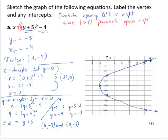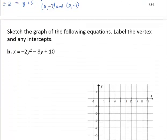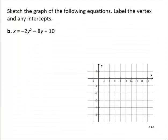Let's see another example. Again we're asked to graph the following equation, labeling the vertex and any intercepts. So we have x equals negative 2y squared minus 8y plus 10. Again we see this, it looks quadratic, but the x and the y seem to be in a different place. It is a parabola, and again it will open left or right.